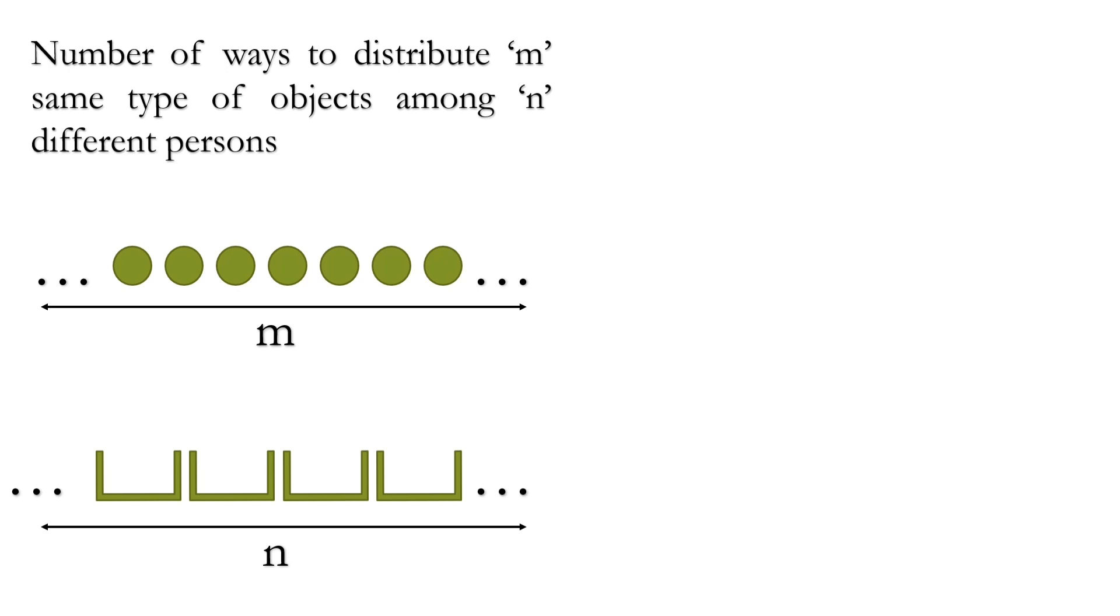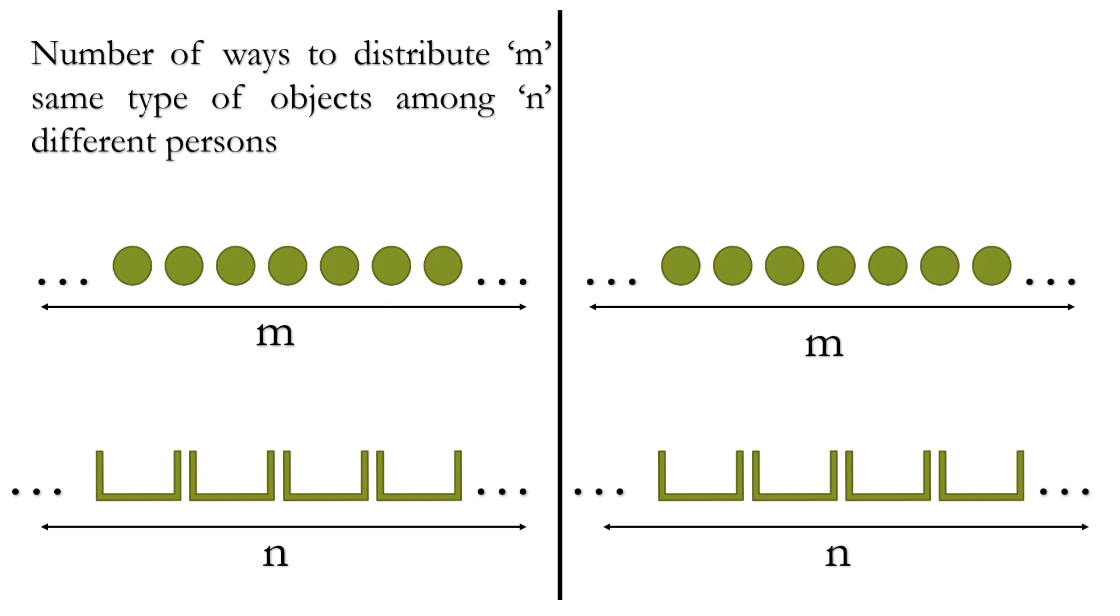Draw the same pattern here. Now put n same type of objects in these n boxes. We don't have to disturb these objects. We have to distribute the above m objects in n different persons.